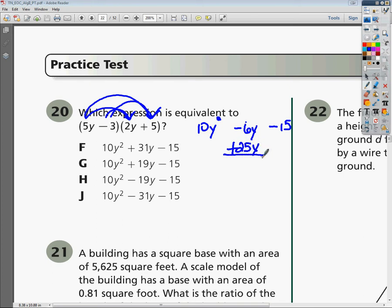Once you take the difference between the two, you have positive 19y. So your final answer is 10y squared plus 19y minus 15.